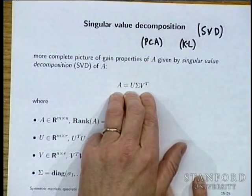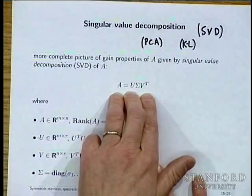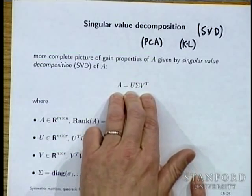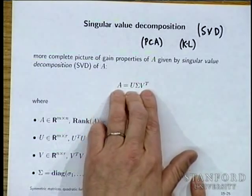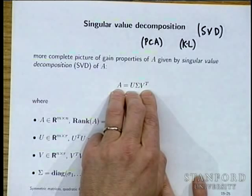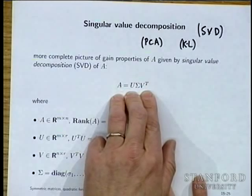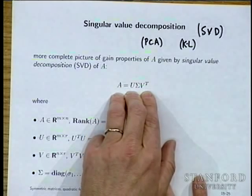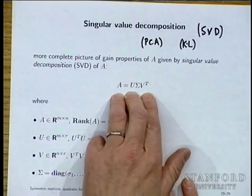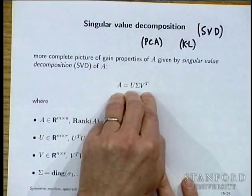It is very important to keep your matrix decompositions clear in your mind. We've seen diagonalization — something like A = T Λ T⁻¹. We've seen QR factorization. We've seen an orthogonal eigendecomposition — A = Q Λ Q^T. And now this is yet another one.